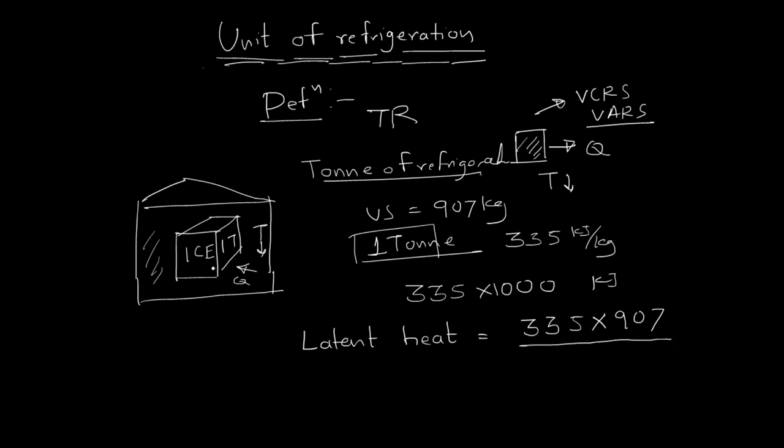This particular melting process should happen within 24 hours. Then we will divide it by 24 hours, convert it into minutes and then into seconds. If we solve this, we will get an answer equal to 3.51 kW. This is the unit of one ton of refrigeration.